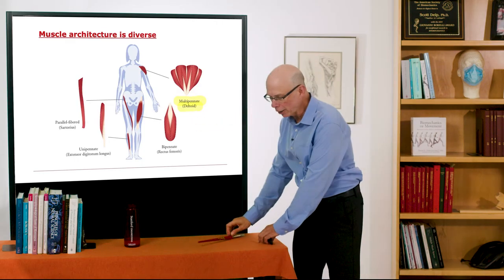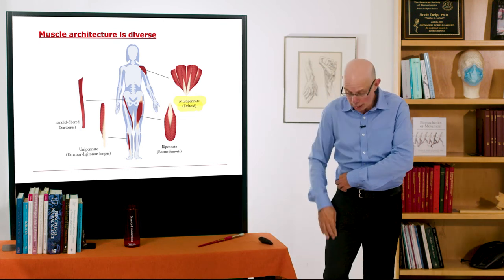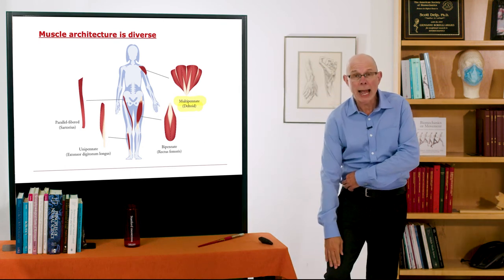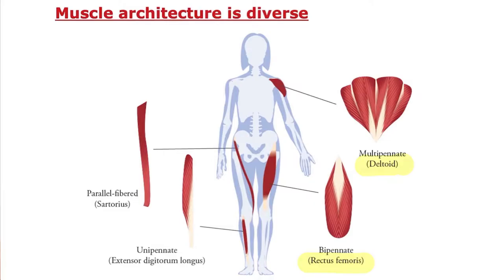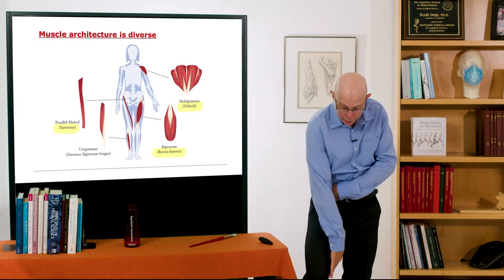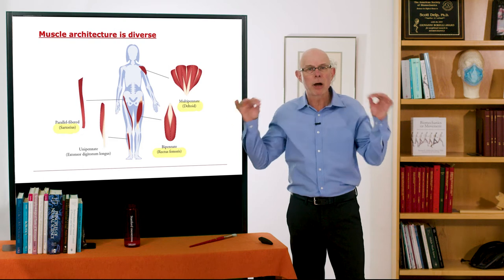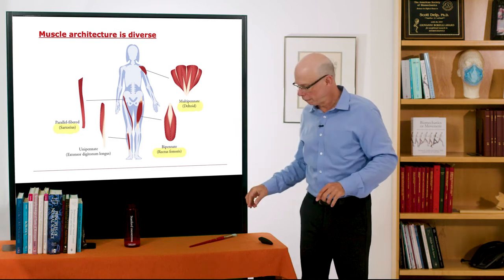There's a muscle in the front of your thigh running from your anterior superior iliac spine down to your kneecap called the rectus femoris — that's a bipinnate muscle, looking like that classic feathered form. The sartorius muscle runs from up here down behind your knee and has the longest fibers in the body — a parallel-fibered muscle with quite long fibers.